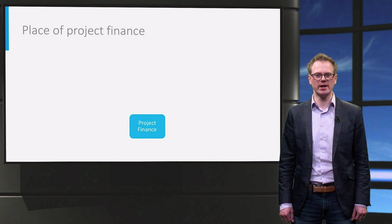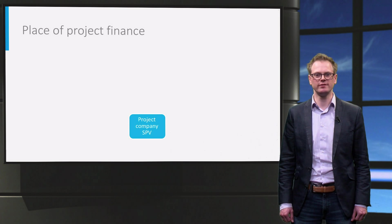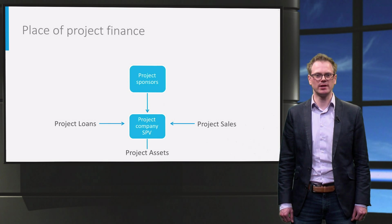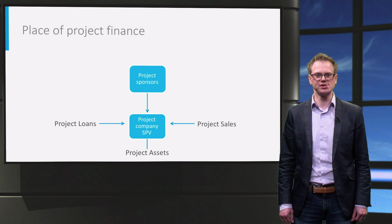That is why project managers need to have a good understanding of investors' considerations. The linking of the financing to the project is achieved by undertaking both the project and the financing through what is called a special purpose vehicle, or SPV. That SPV is a company that undertakes the entire project and has no other activities than the project. We will see later on what legal benefits this has.